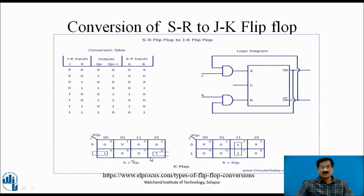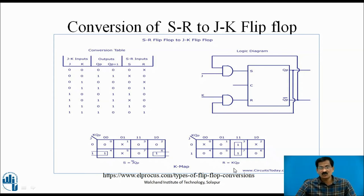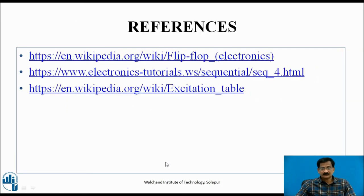Using the K-map with J, K, and Q as variables, we apply the conventional combinational logic method to determine the S and R expressions. The result gives S equals J·Q-bar and R equals K·Q. These are the Boolean expressions derived for converting an SR flip-flop into a JK flip-flop. These references are used for the conversion of various flip-flops.